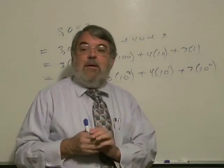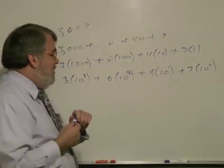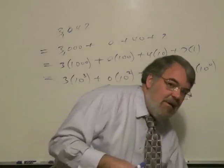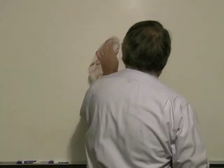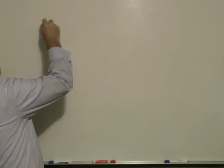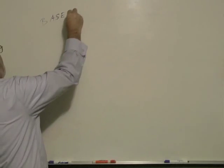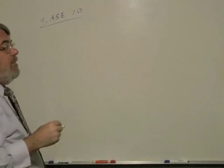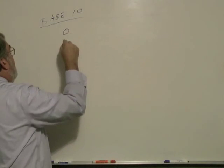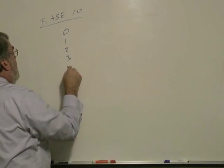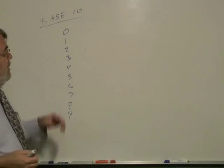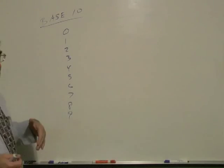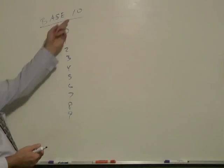How do we count in base 10? Let me cover that because it's relevant to the other base systems we're going to study. In base 10, we have the digits 0, 1, 2, 3, 4, 5, 6, 7, 8, 9. There are 10 digits counting 0 as the 10th digit.